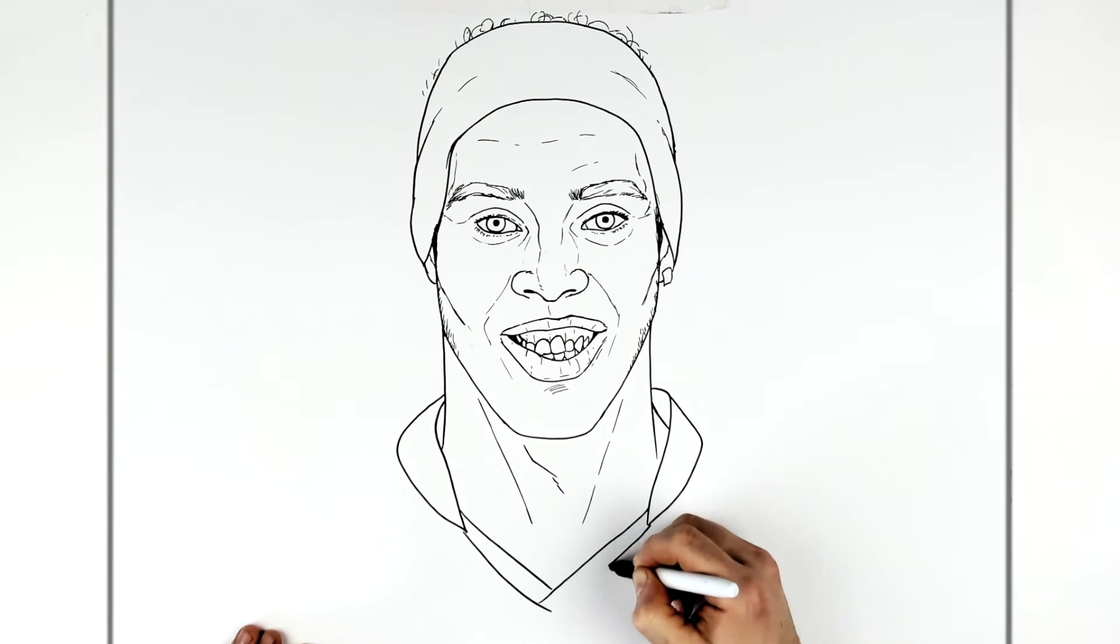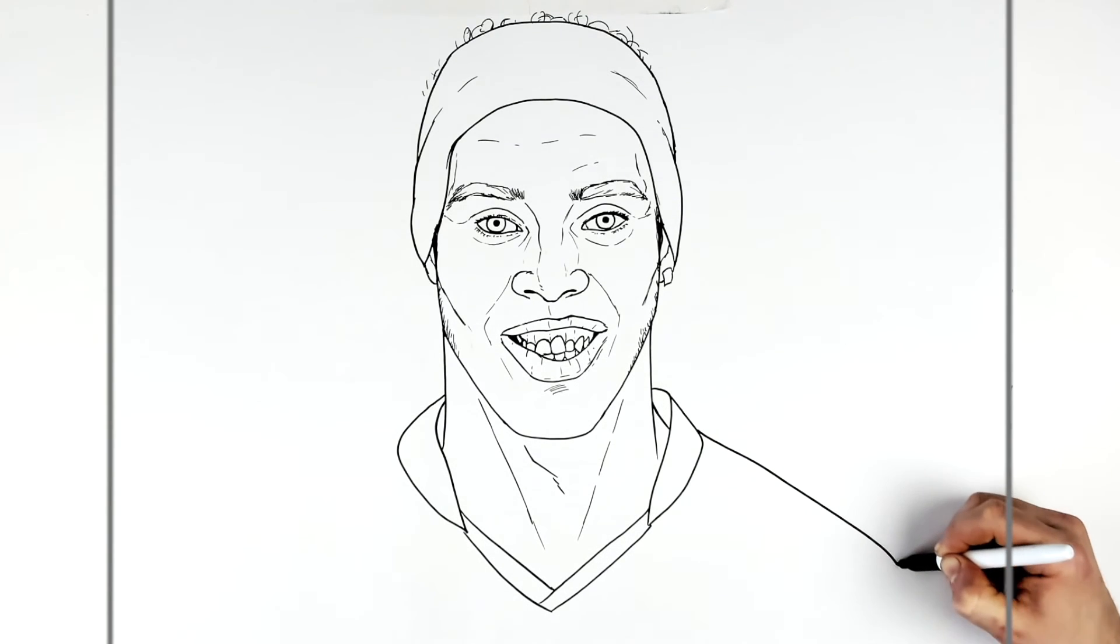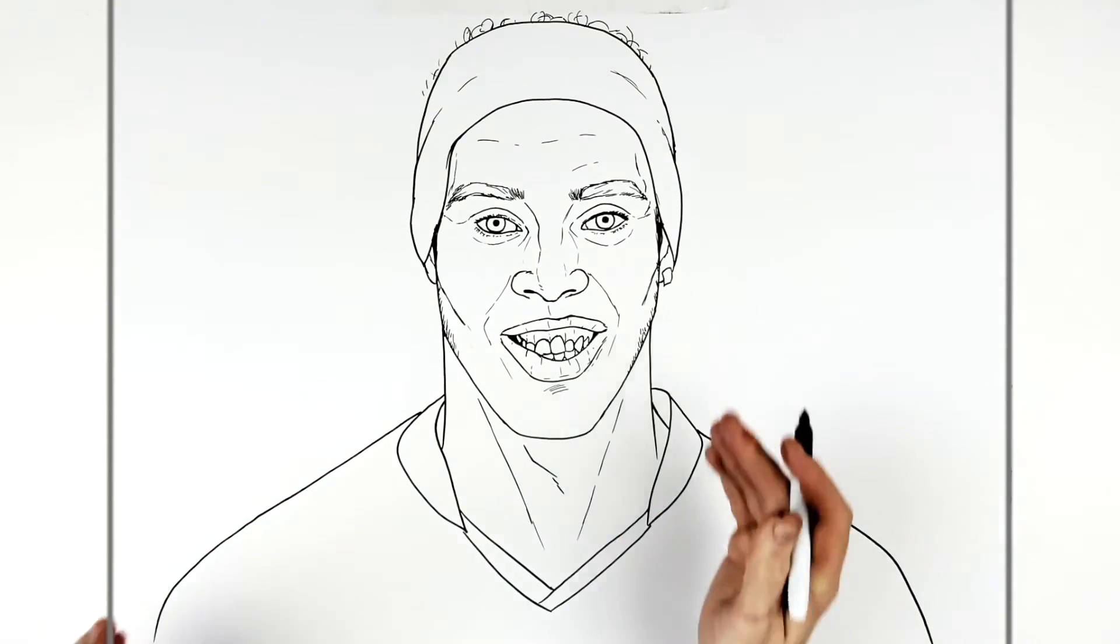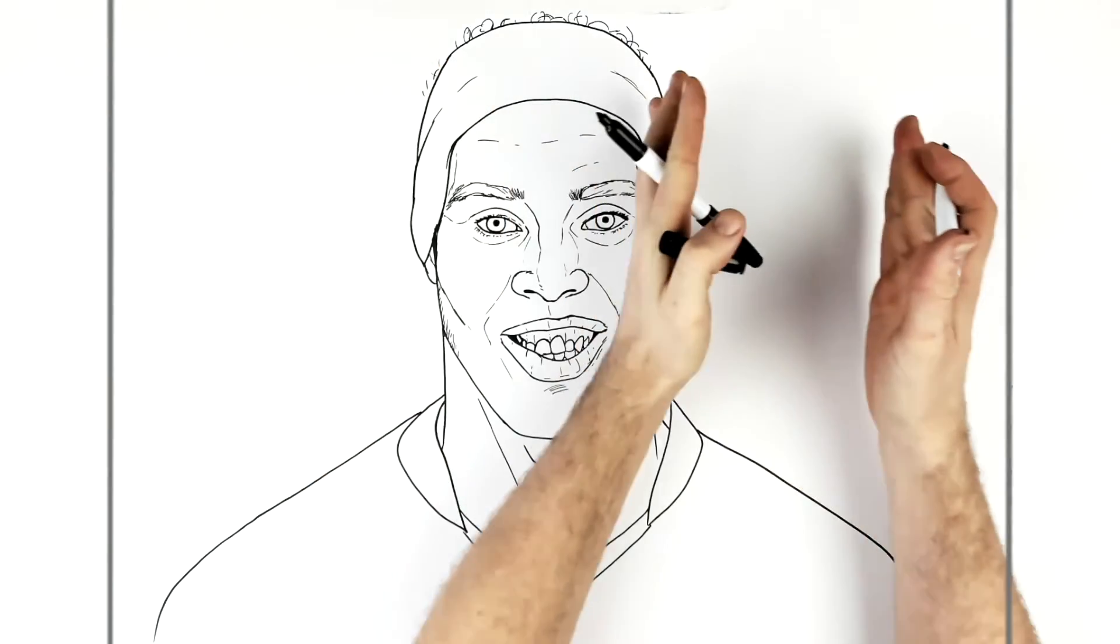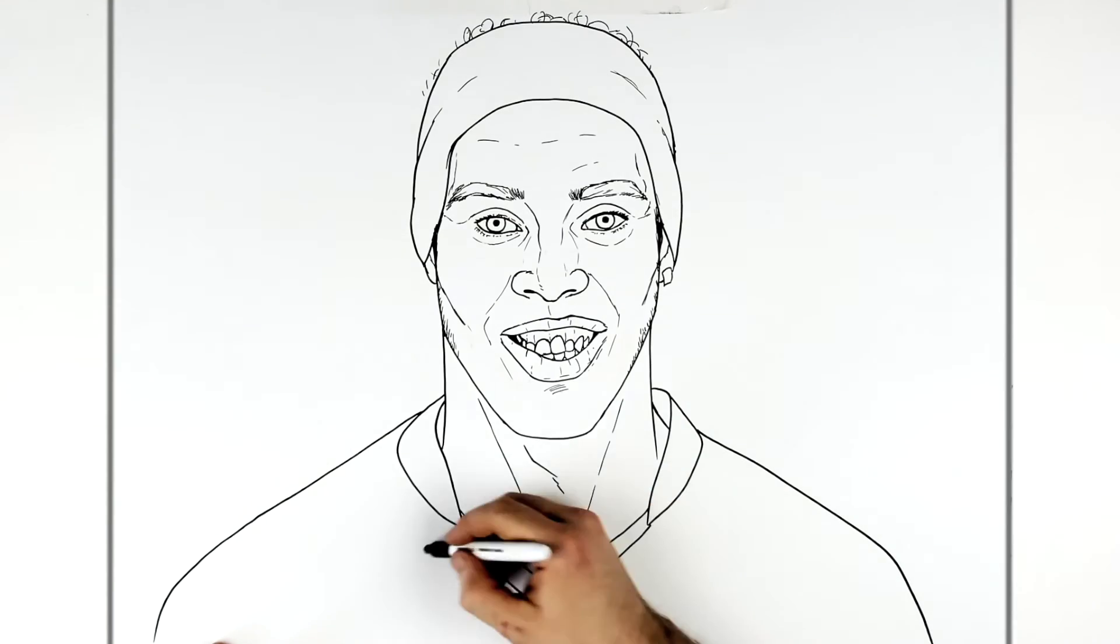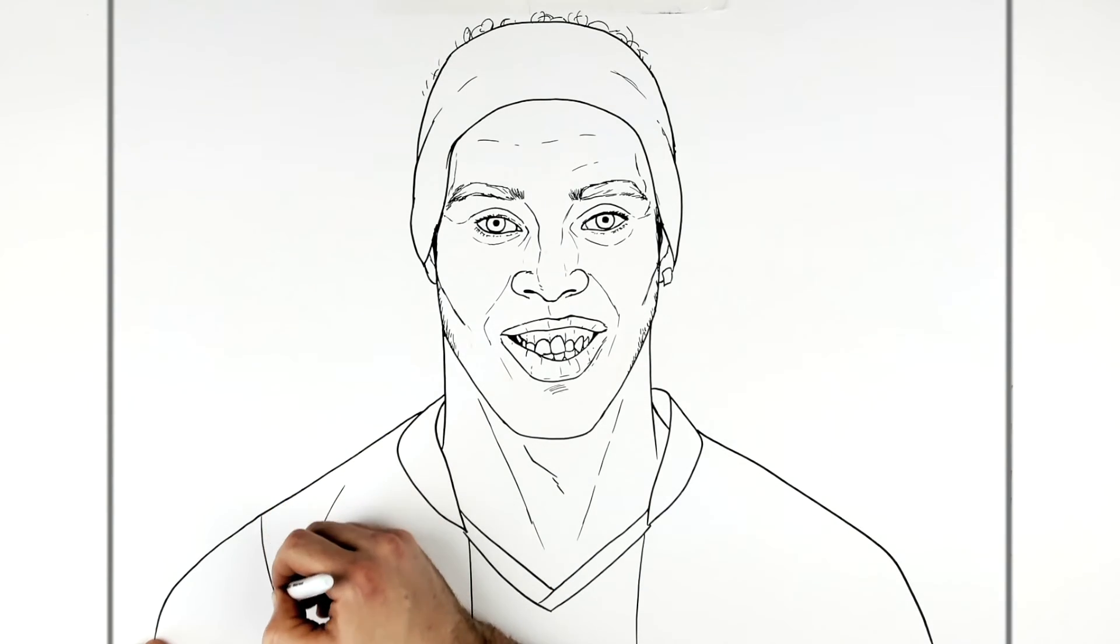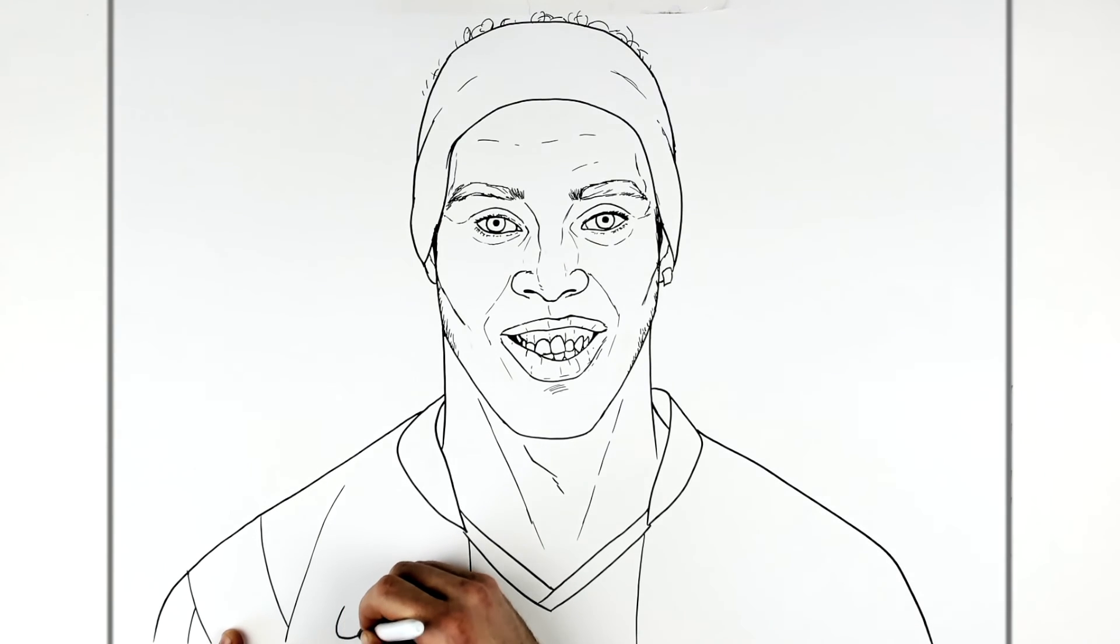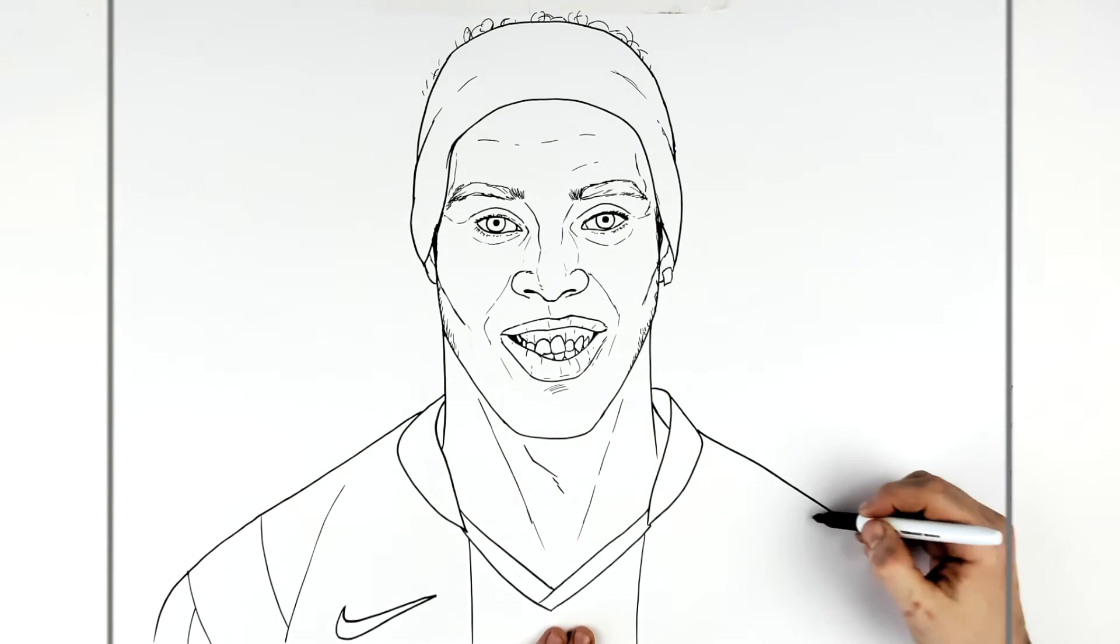I think I want to give him more stubble. I'll come back and do more stubble afterwards. Finish his jersey. He's got this V-like collar, it's an older sort of Barcelona jersey. And then shoulder comes down. So you're about head width for the shoulder on a male. Three heads fit across the shoulders: one, two, three.